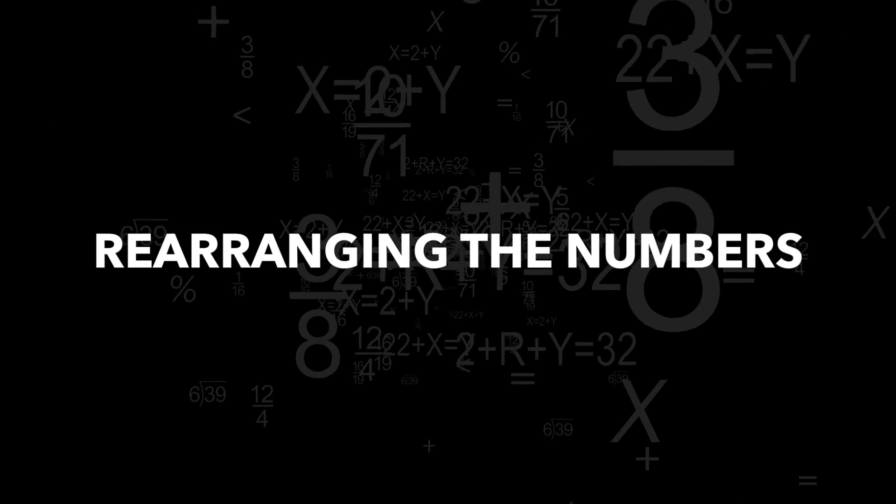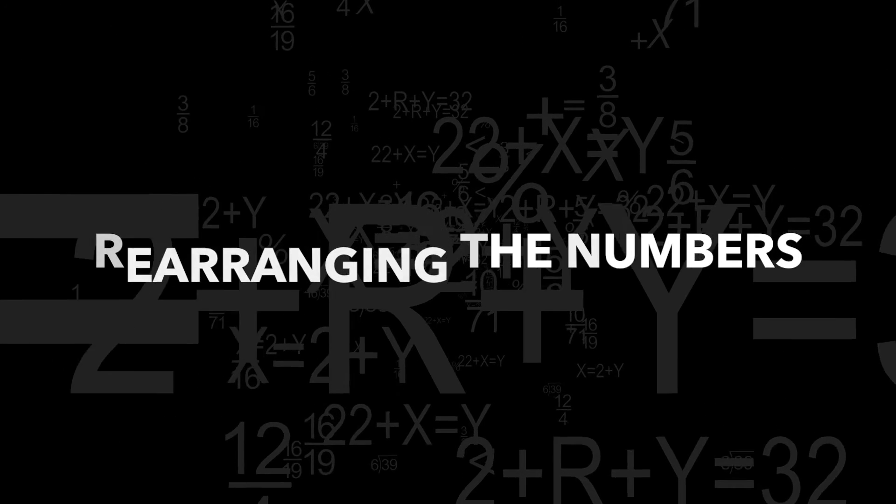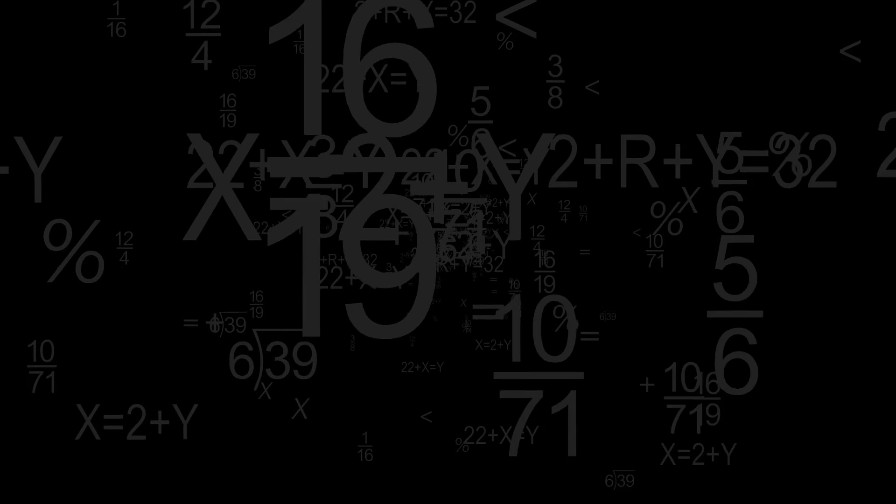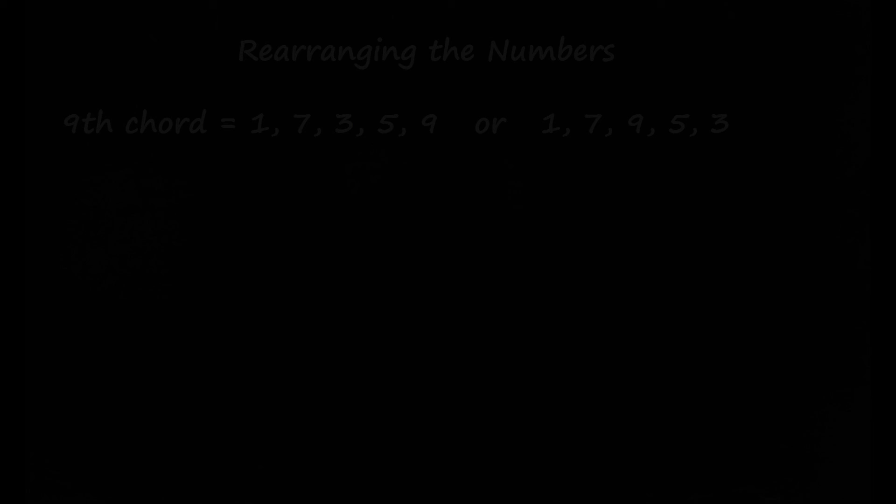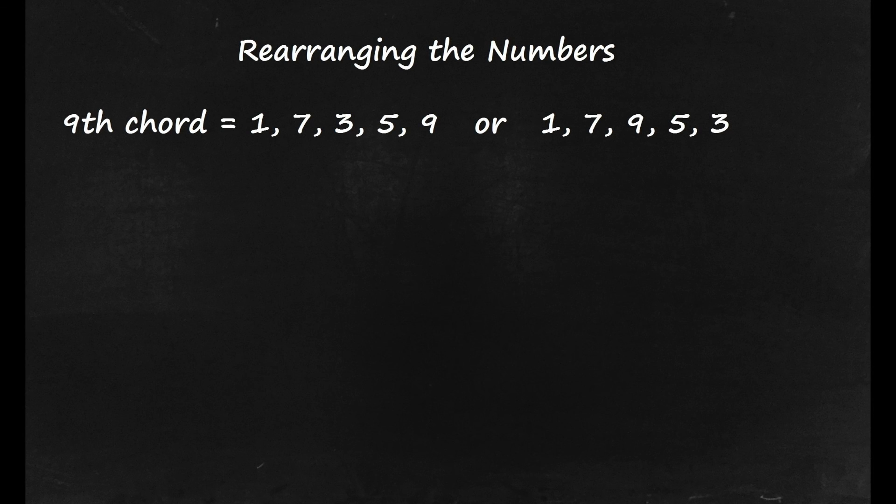Once you have the correct notes of the chord, you can reorder the notes to sculpt the sound that you want. This is known as voicing. For example, the notes of a 9th chord could be reordered as 1, 7, 3, 5, 9.